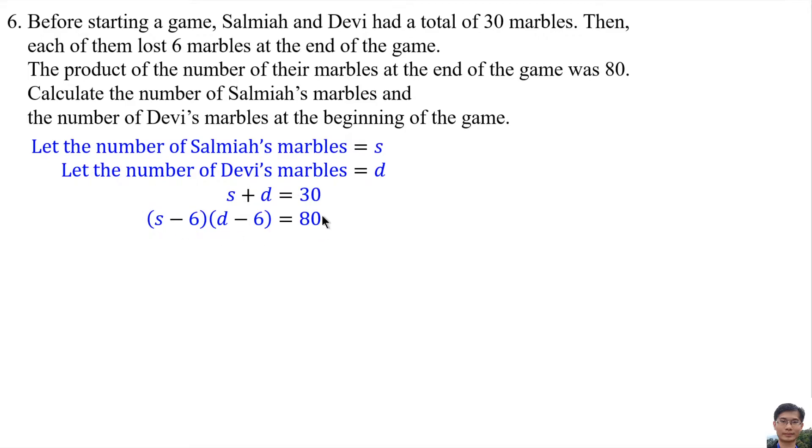Then we solve this simultaneous equation to find the values of S and D. From this equation, we get S equals 30 minus D, and then we substitute this equation into this equation.